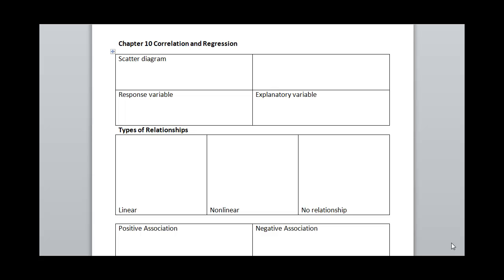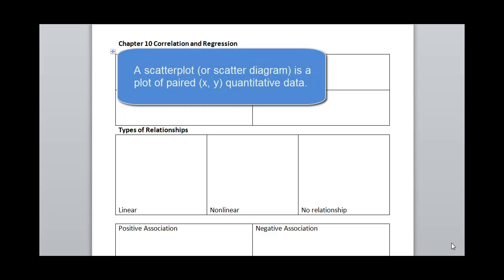In this chapter, we're looking at correlation and regression, and the first thing we need to consider is the scatter diagram. When we're doing regression, we're trying to determine if there's a relationship between two quantitative variables, such as height and weight, or time and temperature. The first way we do that is by looking at a scatter diagram — just a plot of the data, where we plot the x value against the y value.